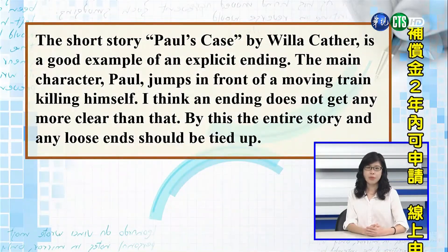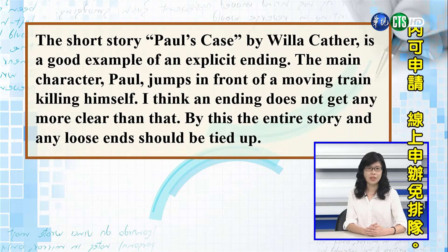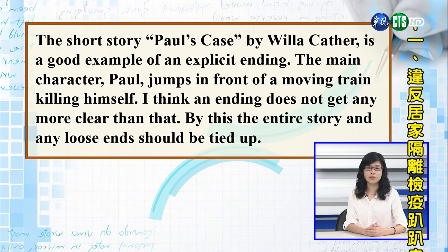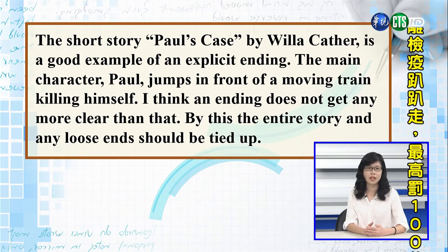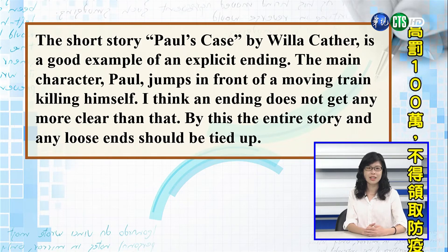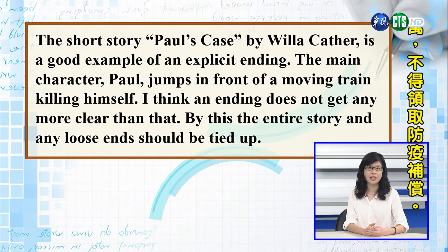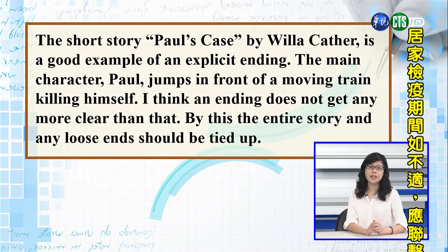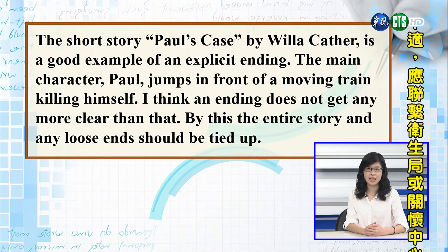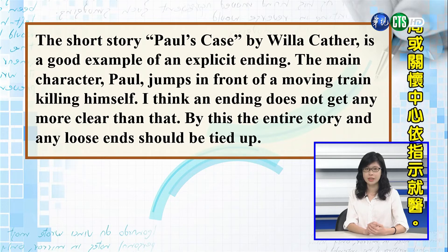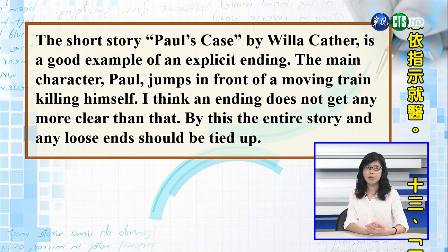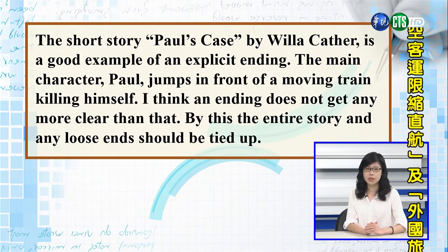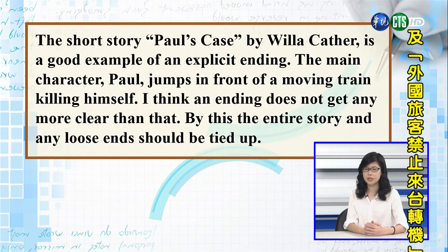The short story Paul's Case by Willa Cather is a good example of an explicit ending. The main character Paul jumps in front of a moving train, killing himself. I think an ending does not get any more clear than that. By this, the entire story and any loose ends should be tied up. 像是Willa Cather的短篇小说Paul's Case是一个很明显结局的好例子。主角Paul跳到一辆正在行驶的火车前自杀，这个结局让整个故事有个高潮的结尾。